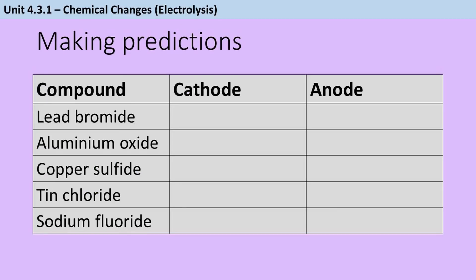You need to be able to predict what the products of electrolysis will be. Now for a molten compound, this is pretty straightforward, as long as you can work out what element has given rise to the negative ion. So for instance, say we have lead bromide.